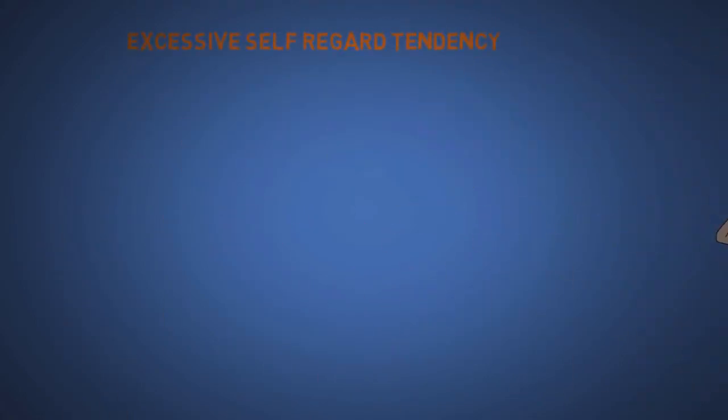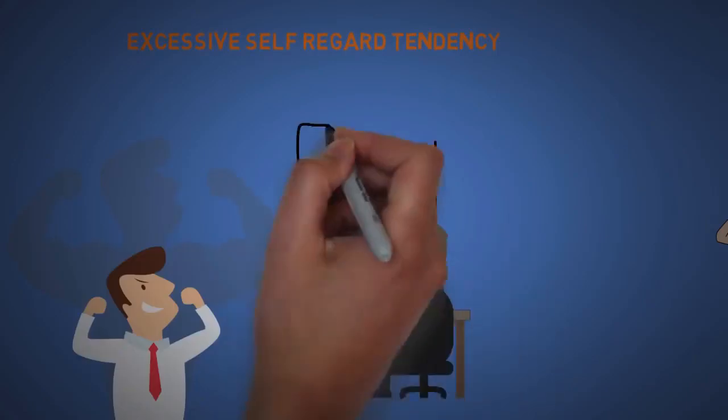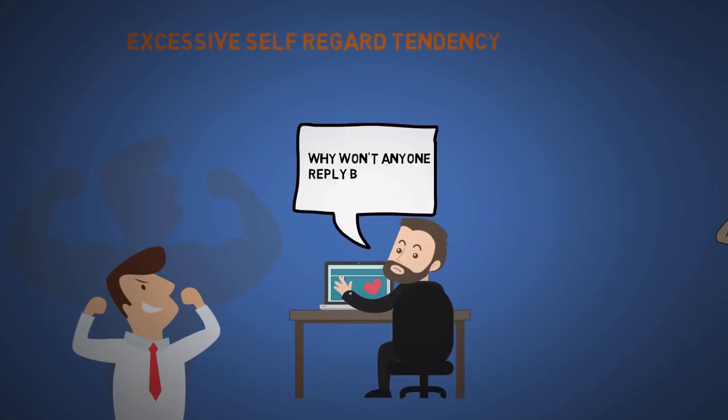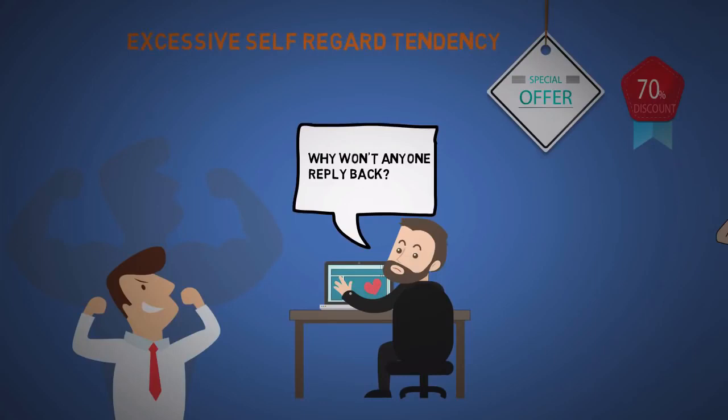The twelfth is excessive self-regard tendency. People tend to think highly of themselves. Most people in online dating sites think they're more attractive than they really are. So when persuading people, make them feel special and that just for them, you're gonna give them a big discount or something. But it doesn't even have to be big. There's a study that shows how waitresses can increase their tips by simply using mints. I'll put a link to an article in my descriptions.